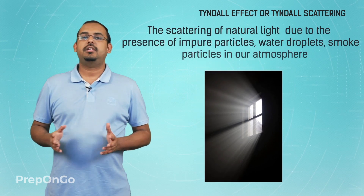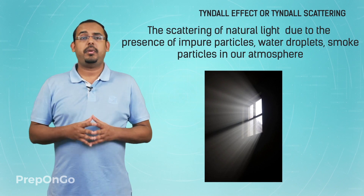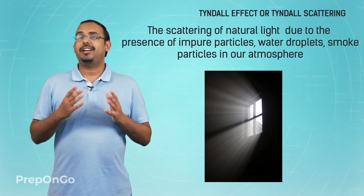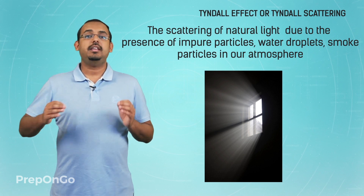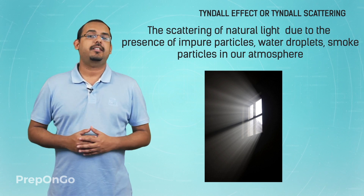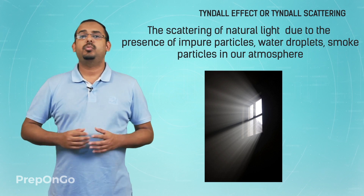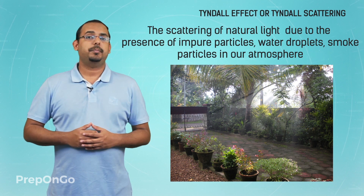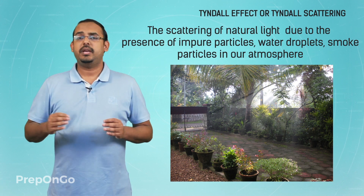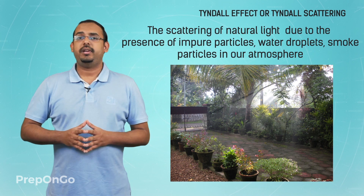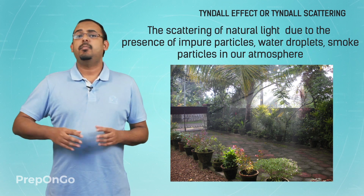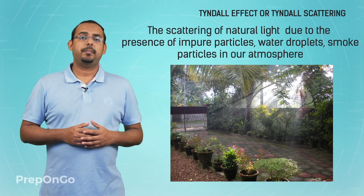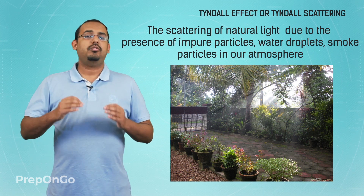This scattering of natural light due to the presence of dust particles, water droplets, or smoke particles in our atmosphere is what is known as the Tyndall effect or Tyndall scattering. Another occurrence where the Tyndall effect can be observed is when you go for an early morning walk or jog — due to the presence of mist, that is tiny water droplets in the atmosphere, the morning light gets scattered, and that is where we can observe the Tyndall effect.